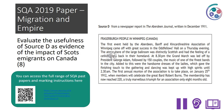Here is an example Evaluate the Usefulness question from the 2019 Migration and Empire paper: 'Evaluate the usefulness of Source D as evidence of the impact of Scots emigrants on Canada.' If you don't complete the Migration and Empire section, use the QR code on screen to access the full range of SQA past papers and marking instructions and select your own Evaluate the Usefulness question. You can pause the recording and complete the question under timed conditions — it should take about 20 minutes. Mark your work using the marking instructions available online.